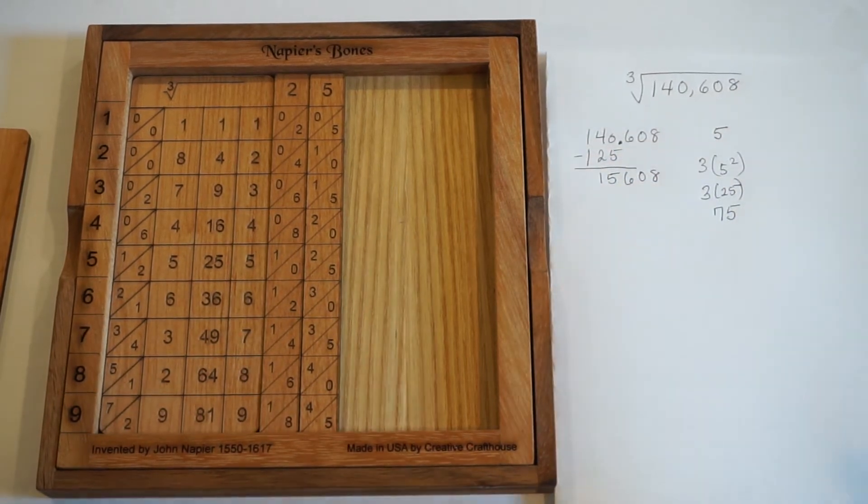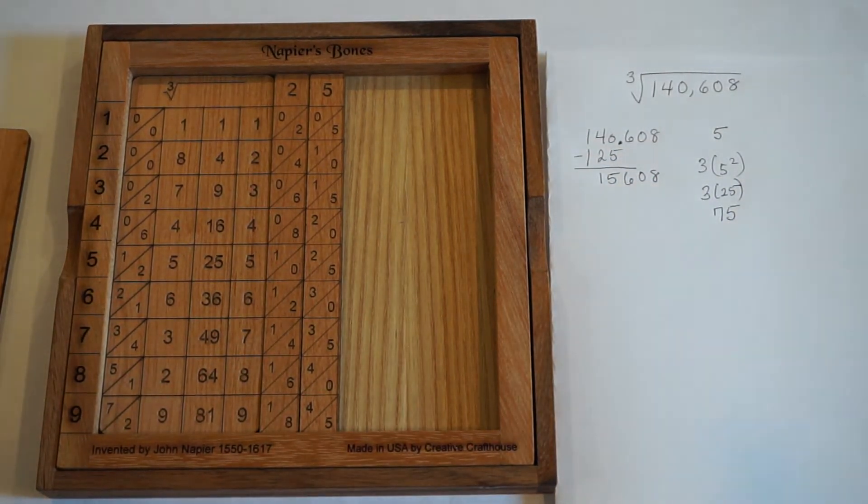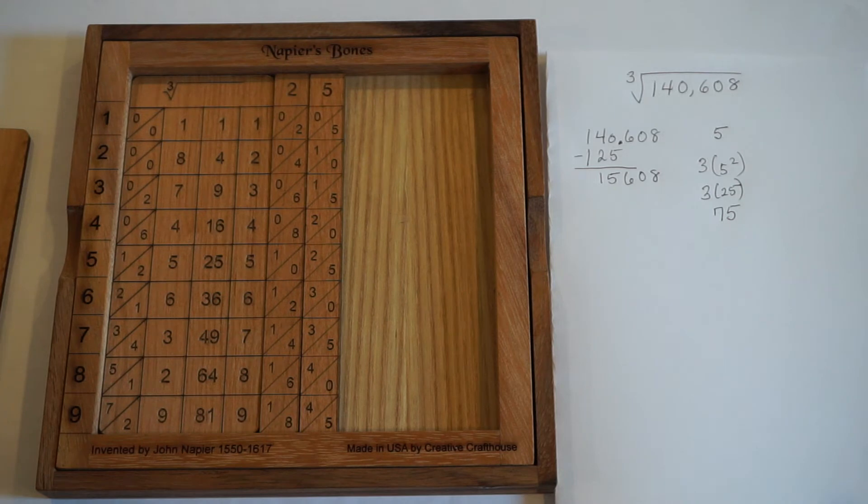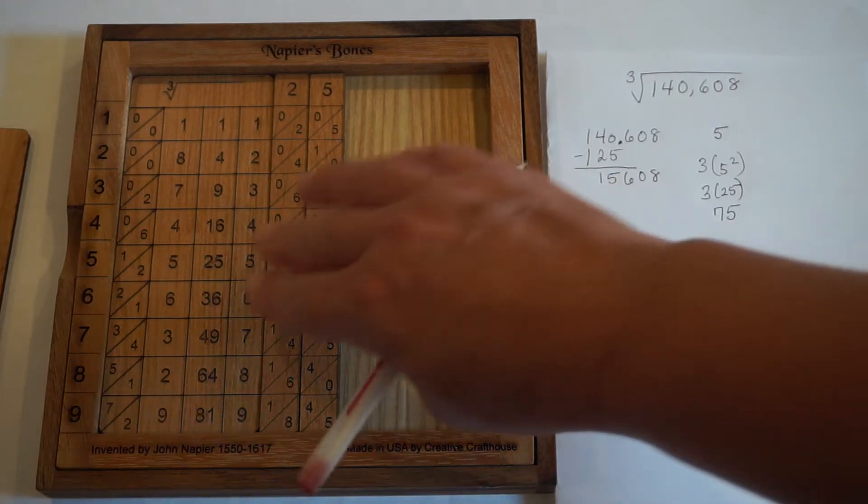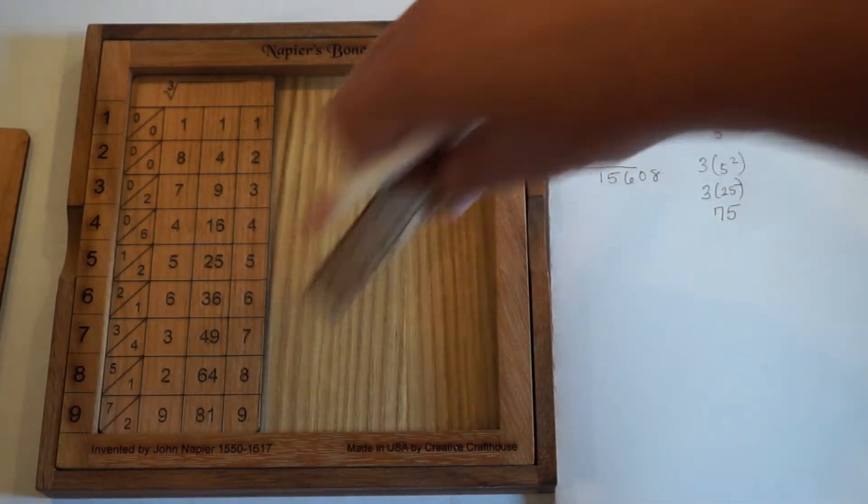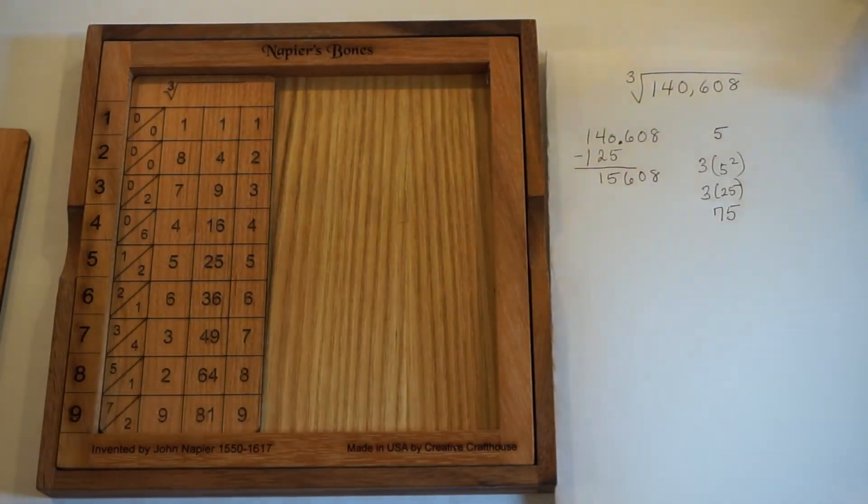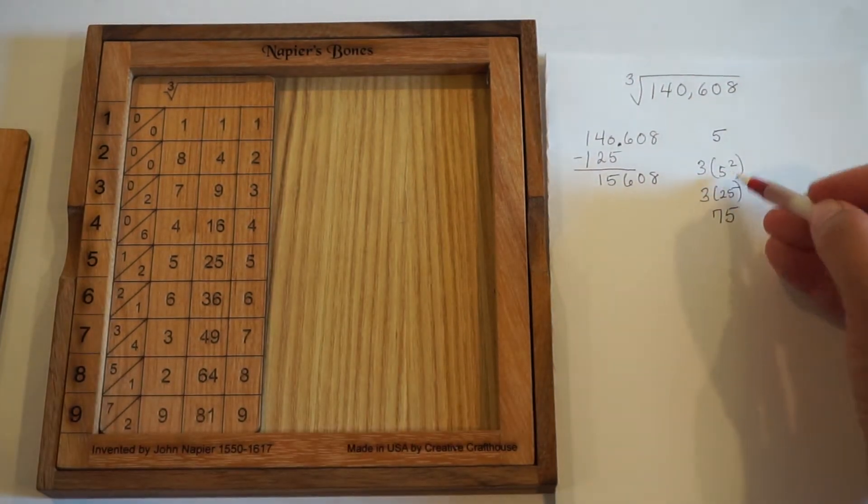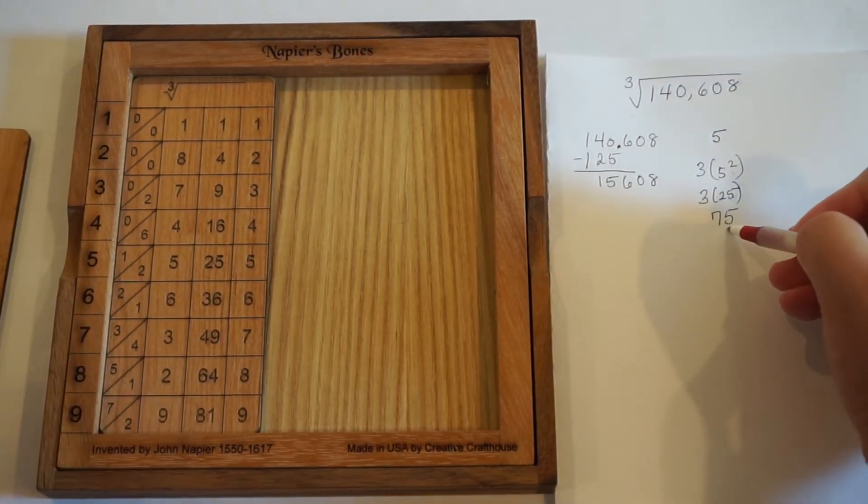So the idea with Napier's bones is you actually don't need to know your squares. You don't need to know your multiplication tables. As long as you can subtract and add, you're able to take cube roots. So that was just some work off to the side. We wouldn't have needed to do that if we know that 5 squared is 25 and 3 times 25 is 75.